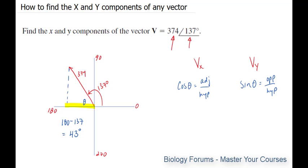Now we will plug in the values that we know. Theta represents our angle. So cosine 43 is equal to adjacent, which is what we're looking for, divided by 374.